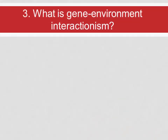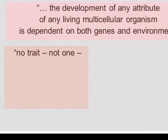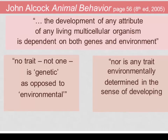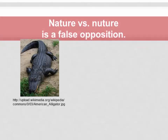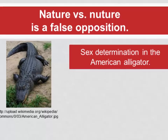What is gene-environment interactionism? This is the fundamental way that behavioral ecologists think about how genes might affect behavior. John Alcock writes in 'Animal Behavior' that the development of any attribute of any living multicellular organism is dependent on both genes and environment. No trait — not one — is genetic as opposed to environmental, nor is any trait environmentally determined in the sense of developing without genetic input. This is called the nature versus nurture fallacy; it's a false opposition to think we can sort out nature and nurture.